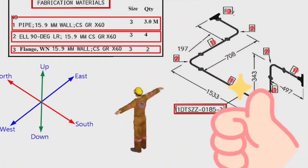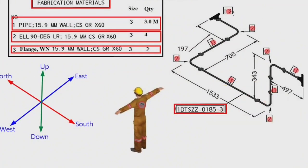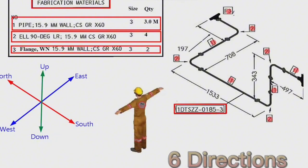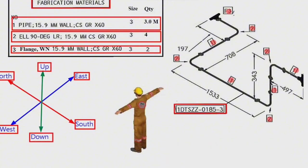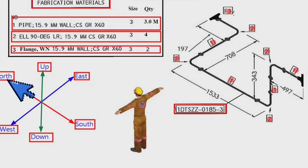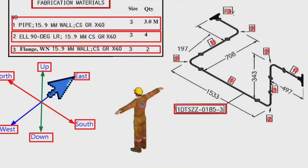We learned the materials used on this pipe drawing. Every pipe drawing has such a sketch — this indicates the directions. By studying these directions, we can easily read any pipe isometric. There are 6 directions here. The man who reads the isometric must think that he is in the middle of these directions. His face will be to the north, his back to the south, his right hand to the east, and his left hand to the west.